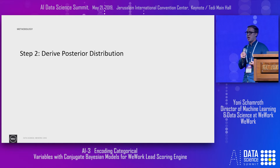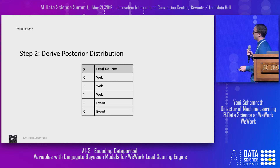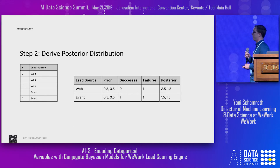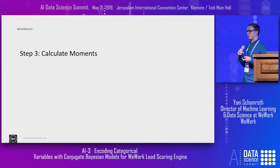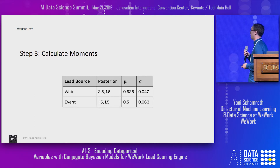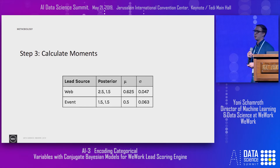The next step is to loop through columns and values to compute the posterior. For this dataset, web has two successes and one failure; event has one and one. The posterior distributions are: for web, Beta(2.5, 1.5); for event, Beta(1.5, 1.5). For any value we haven't seen, it simply gets the prior. Finally, we calculate the moments — the actual encoding we save. Web is encoded with mean 0.625 and variance 0.047; event similarly. Any unseen lead source gets the mean and variance of the prior.